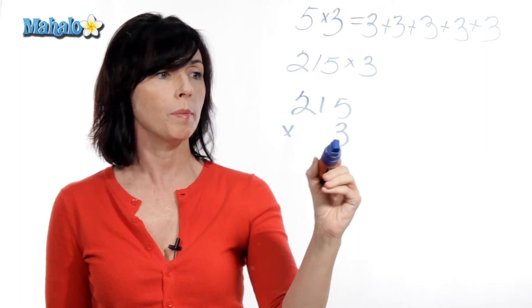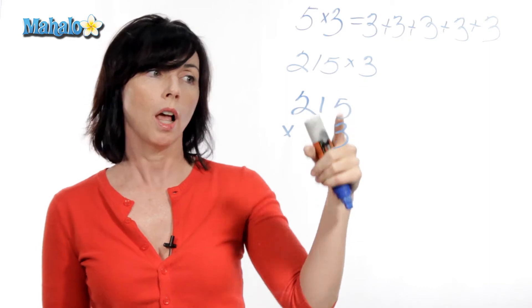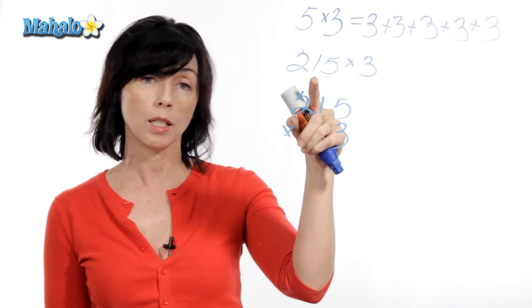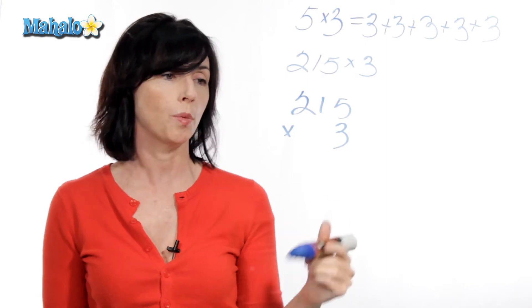And you always wanna make sure to line up your columns. So make sure that the numbers that are in the ones position line up. If you have numbers in the tens position or hundreds position, make sure you line those up too. So this is how it works.